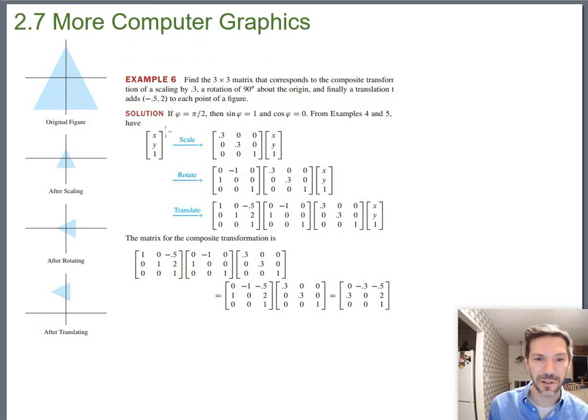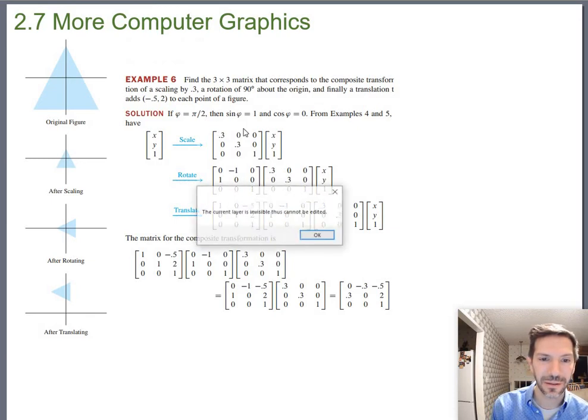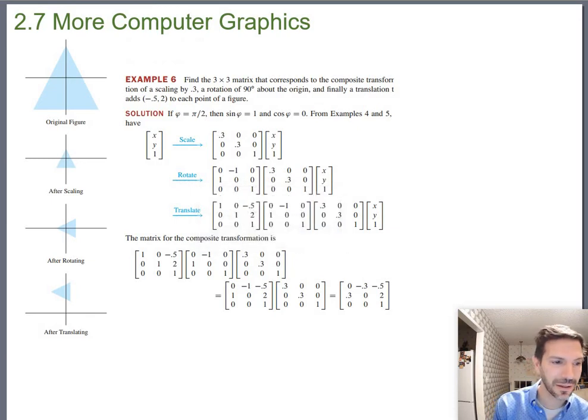Alright, if we just want to do that scaling by point three, that would mean multiply the one zero by point three and the zero one by point three. And those again go right there. Any of our normal old two dimensional transformations go in that part for homogeneous coordinates.